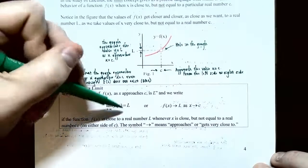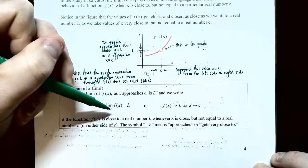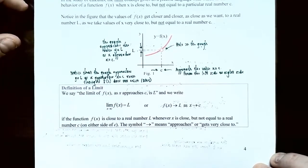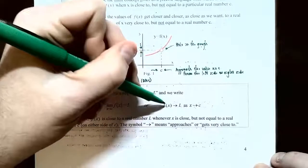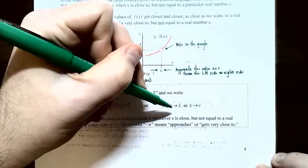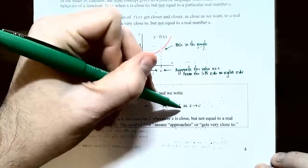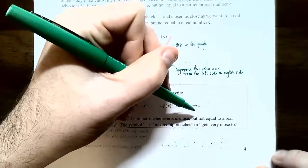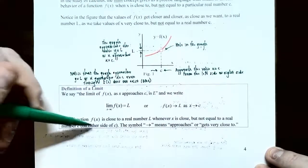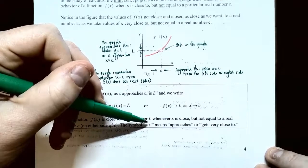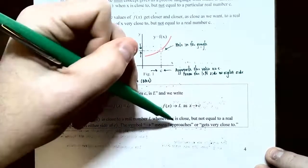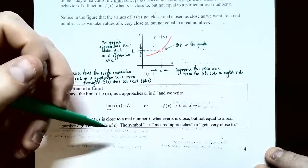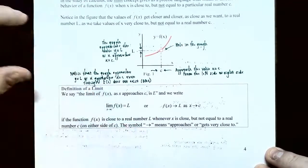The number that the y values are approaching is equal to l. Another way of writing this is with arrow notation: the y values approach l as x approaches c from the left and the right side. If the function gets really close to a y value of l, that's called the limit when x is getting really close to — but not actually equaling — c on either side. The arrow means 'approaches' or 'gets really close to.'